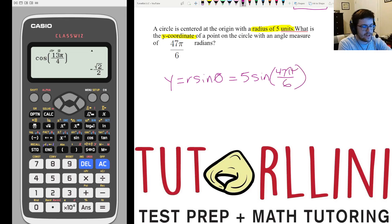Radius is 5, theta is 47 pi over 6. Now we're going to come over here and put this in. So 5 sine, 47 pi over 6, and it tells us negative 5 over 2, which is our answer. That would be our y coordinate.